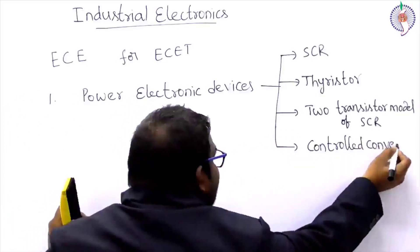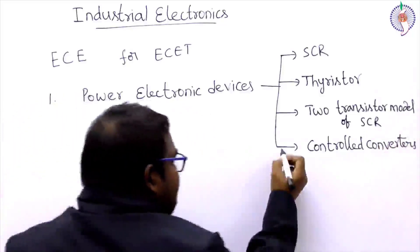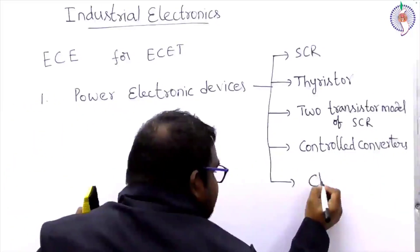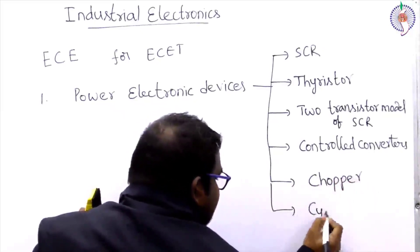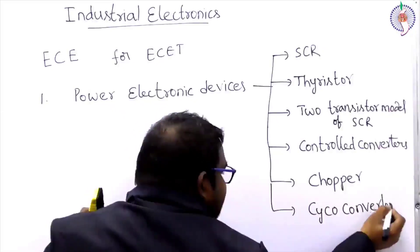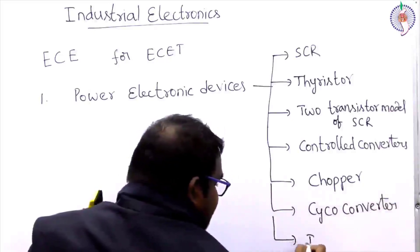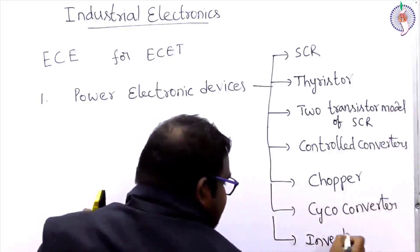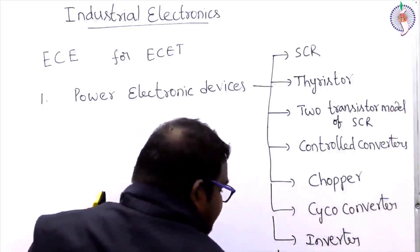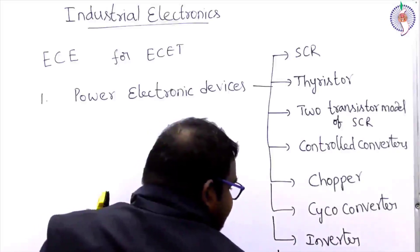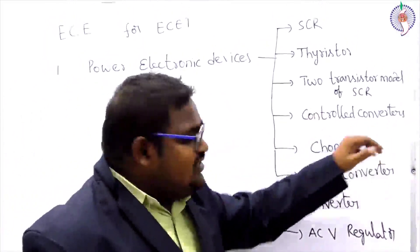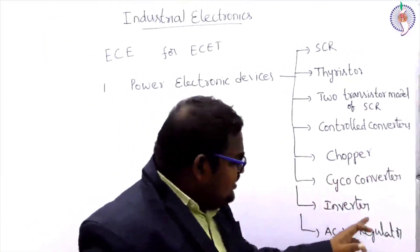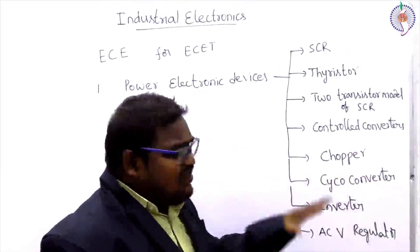After the two transistor model, we will see the controlled converters. Controlled converters include the chopper, cycloconverter, inverter, and AC voltage regulator. So first we see controlled converters, chopper, cycloconverter, inverter, and AC voltage regulator.